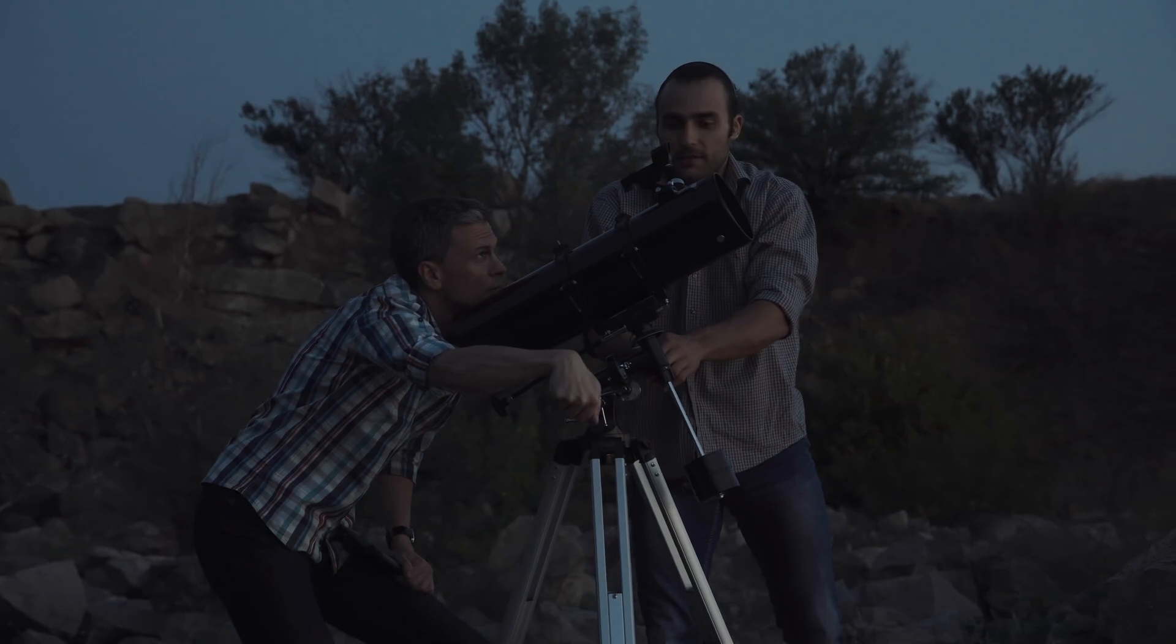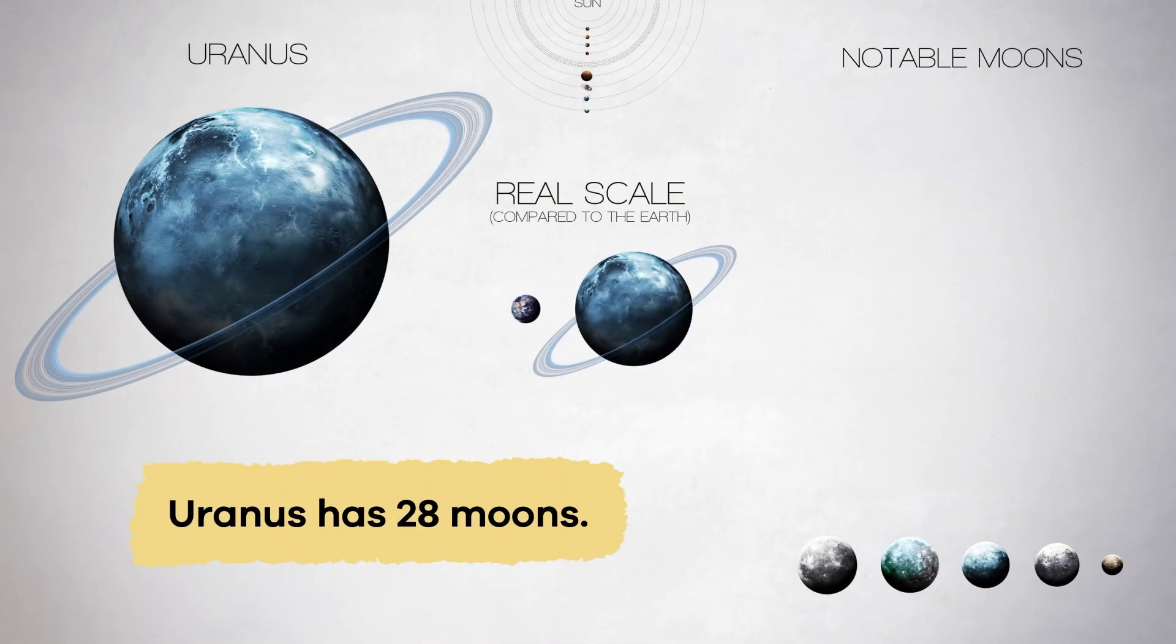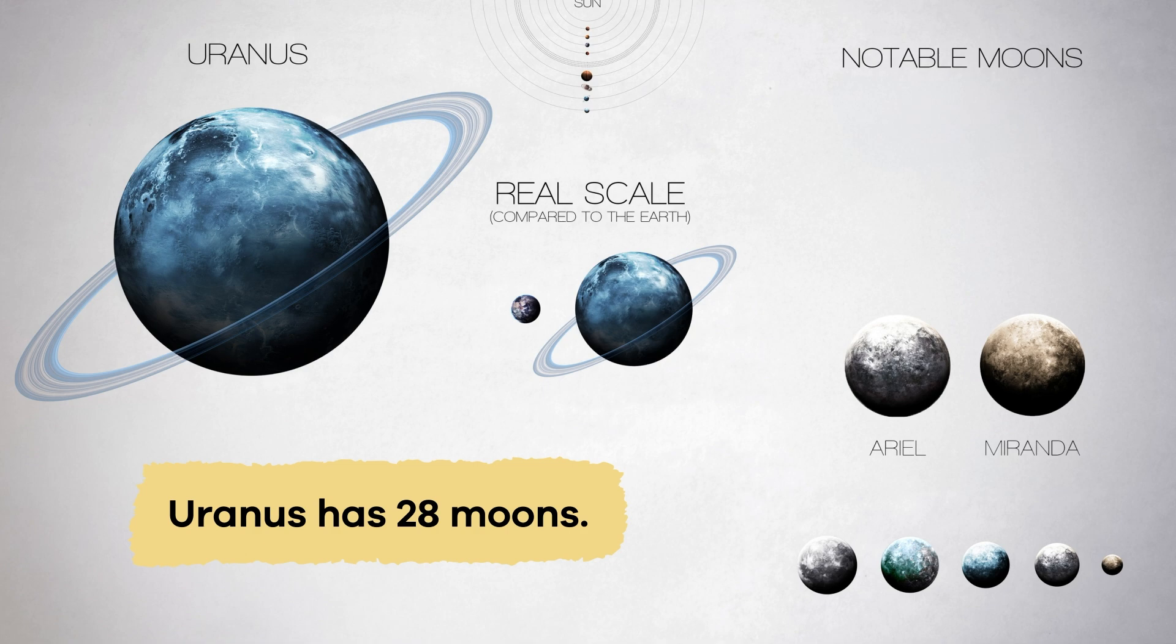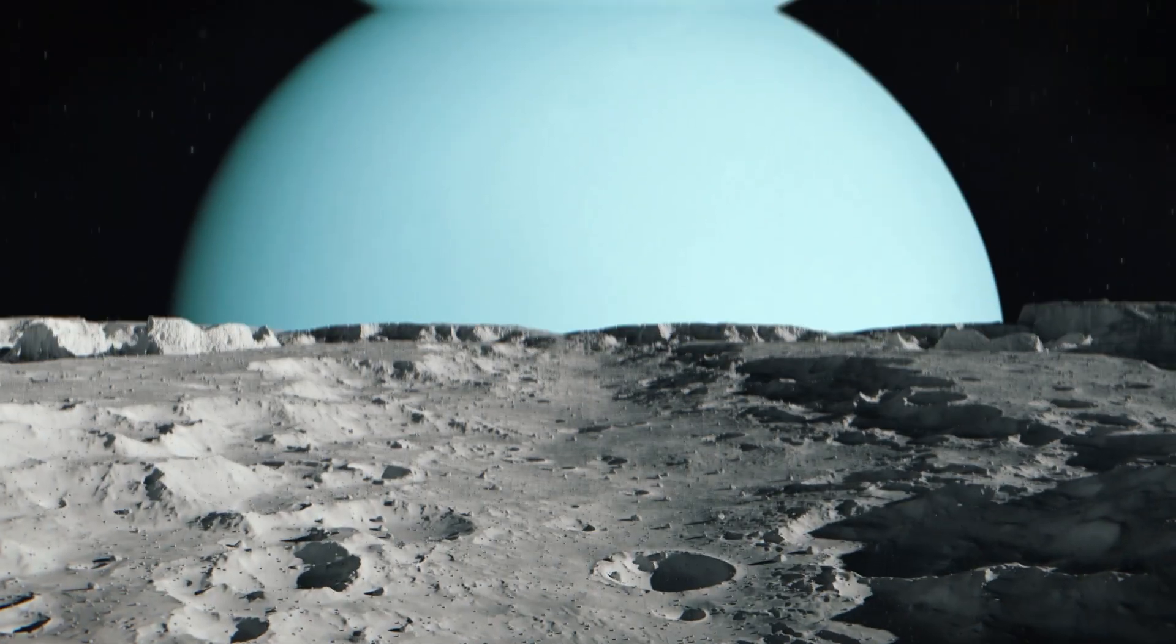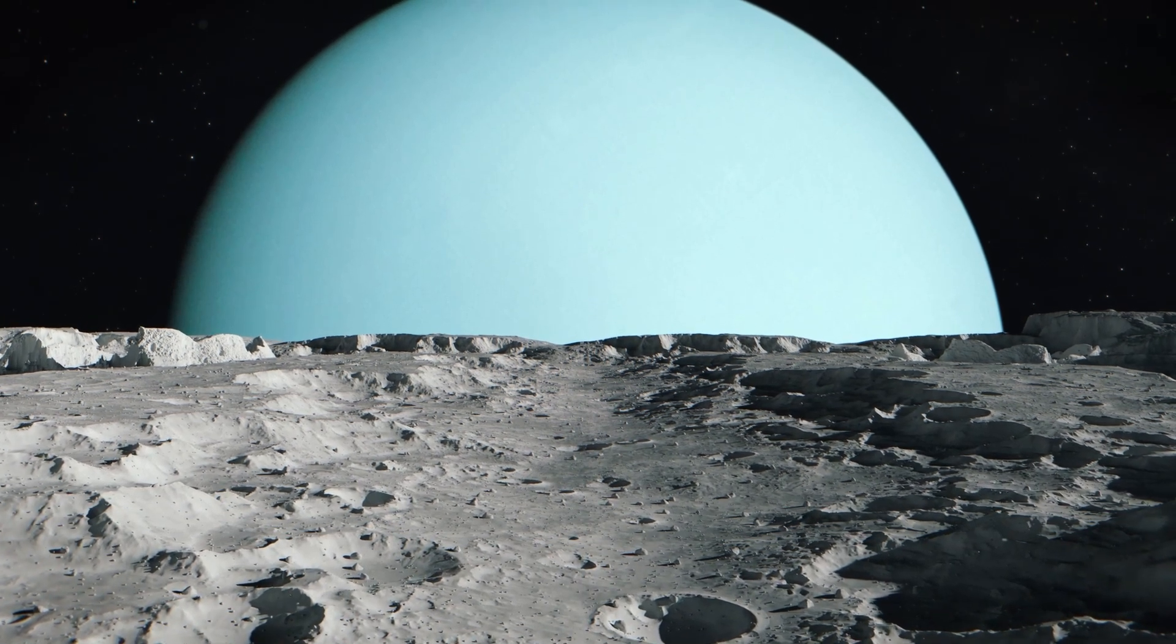According to NASA, Uranus has 28 moons, including Miranda, Ariel, Umbriel, Titania, and Oberon. Each moon is unique in both shape and landscape.